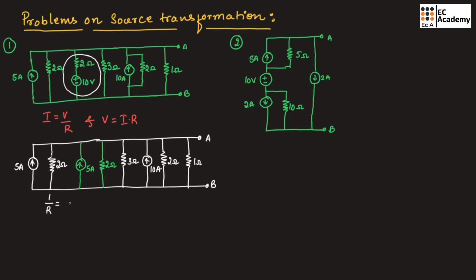We can find the equivalent resistor as: 1/R = 1/2 + 1/2 + 1/3 + 1/2 + 1/1. If we solve this we will get 17/6, therefore R = 6/17, which gives R = 0.352 ohms.